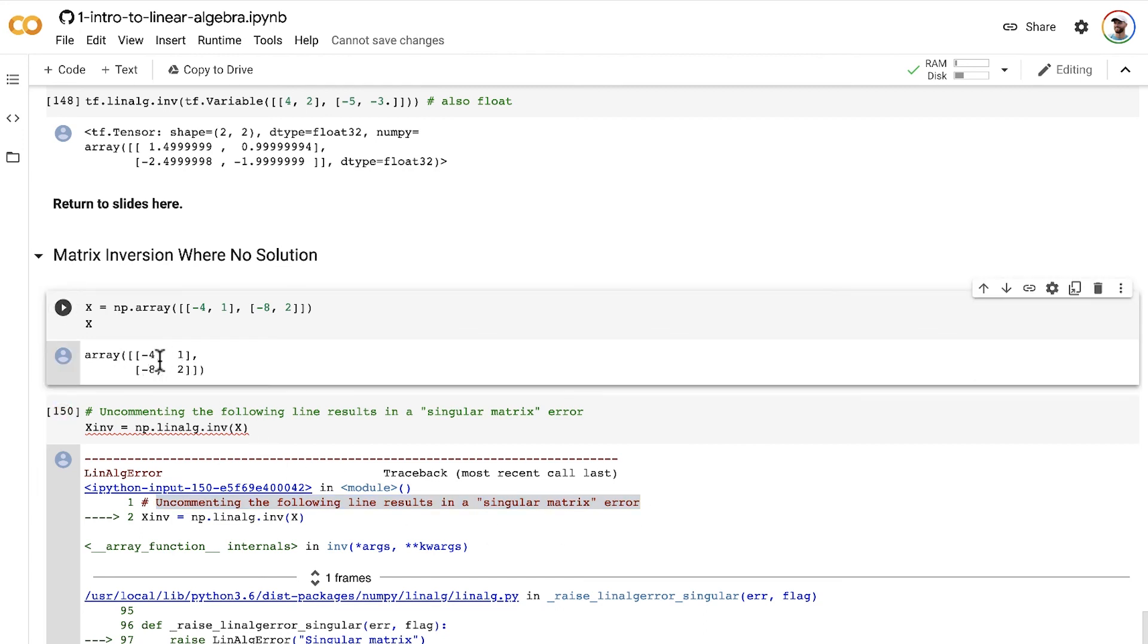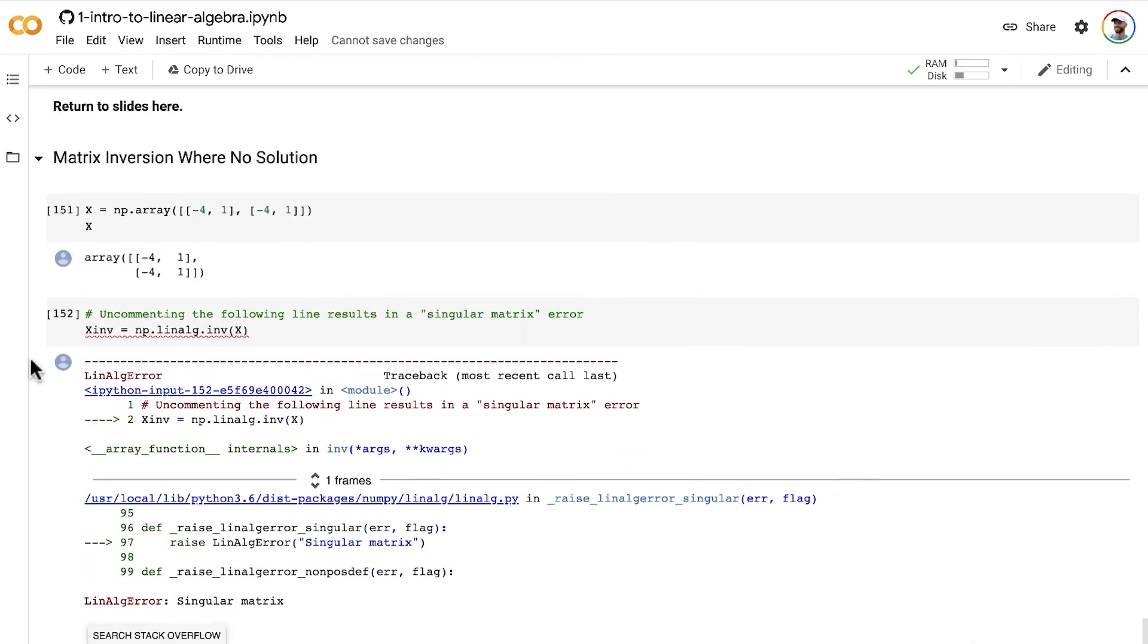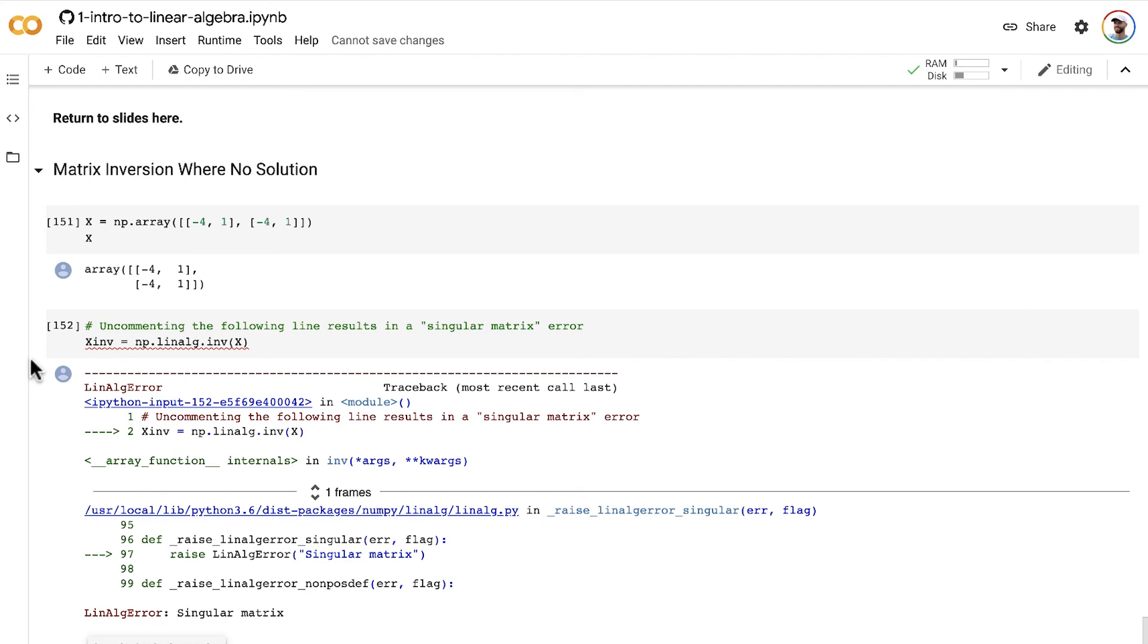Another example, so we have two lines here that don't overlap. Another example would be to have the same line twice, in which case you similarly will get a singular matrix error.